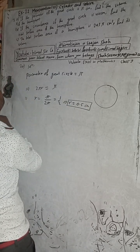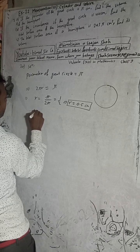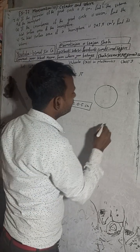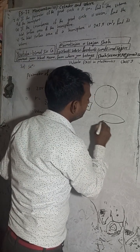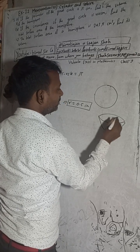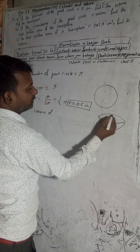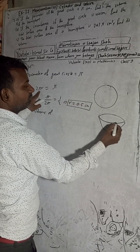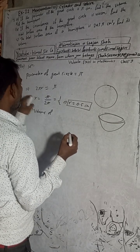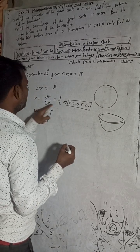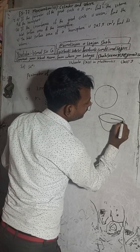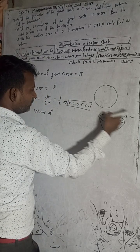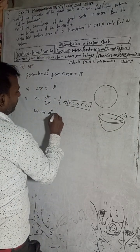Now we have to find the volume of the hemisphere. The great circle had perimeter pi, so from two pi r equals pi we got radius r equals one by two, that is 0.5 cm. Now we can calculate the volume of the hemisphere.